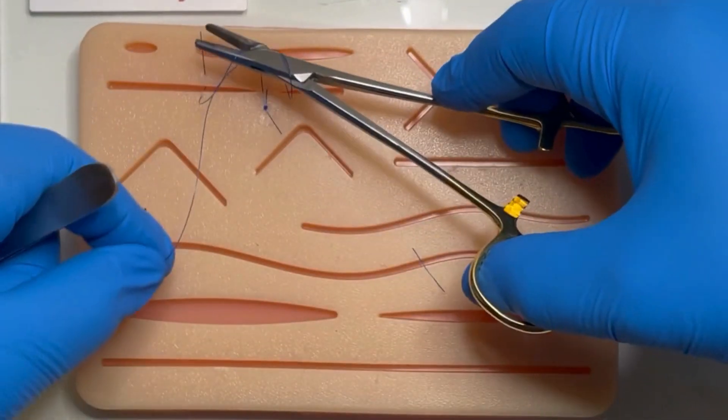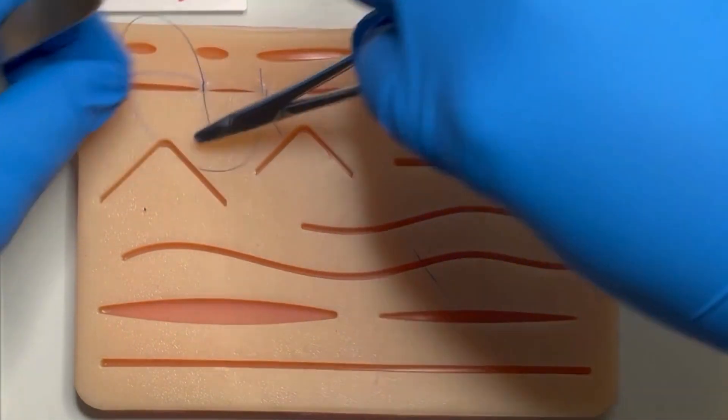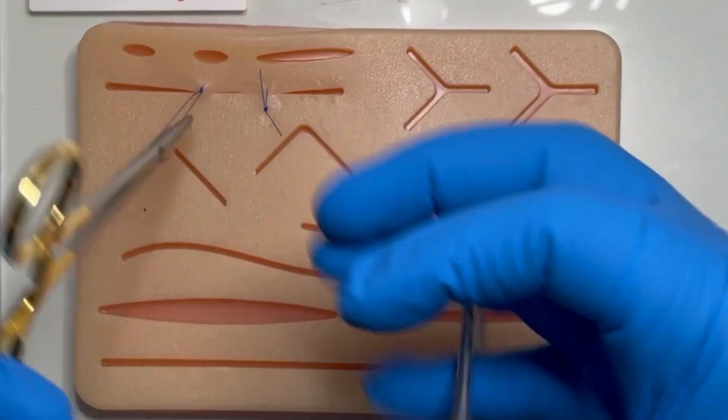Place the needle holder between the suture ends parallel to the wound. Tie a surgeon's knot, then two reef knots. After each knot, your suture ends are laid to the opposite side.